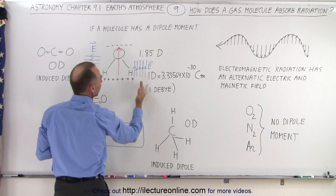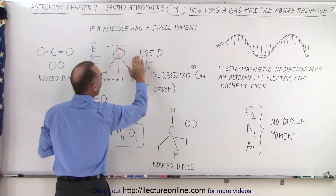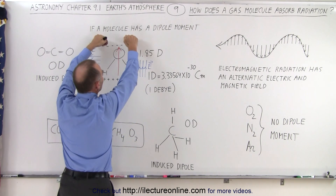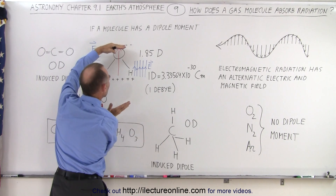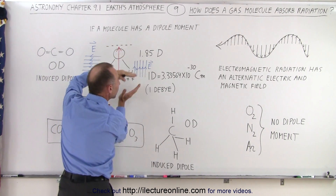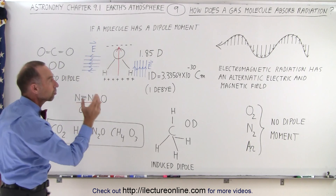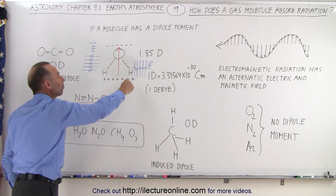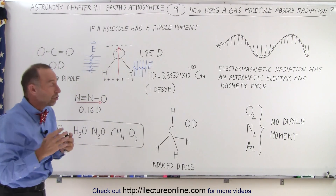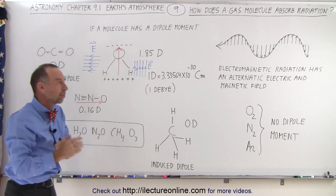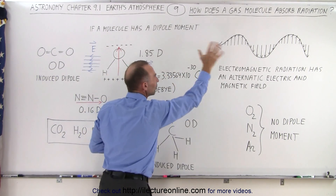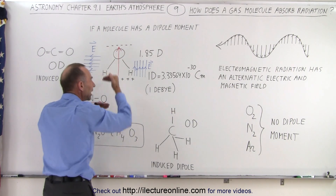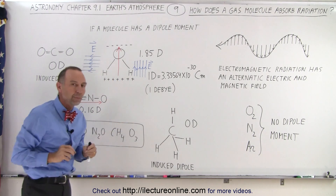Or if the electric field is directed from the bottom to the top, notice that the positive charges will get a force pushing them upward and the negative charges will feel a force pushing downward, so we're compressing the molecule, and it absorbs energy to go into a vibrational mode. This only works as long as the energy contained in the photon is exactly the right kind of energy required to put it into that vibrational or rotational mode, because these transitions can only happen in quantized steps.